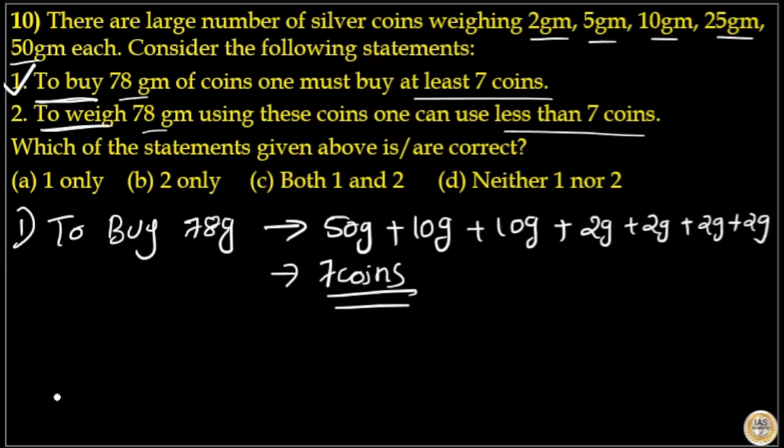So, statement 1 is correct. In the second case, to weigh. To take the weight of 78 gram. That means, one side I can take 80 gram. On the other side, I can take 2 gram. That is total 78 gram. I can weigh 78 gram using 80 gram coin and 2 gram coins.